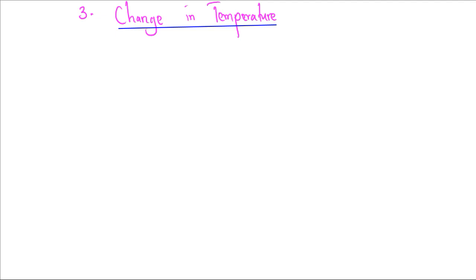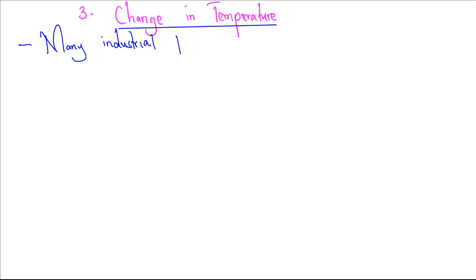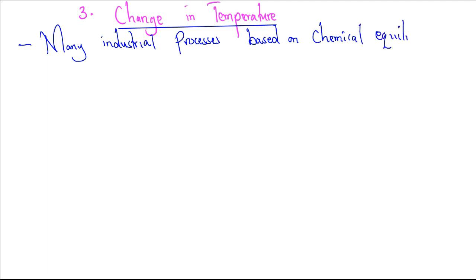Many industrial processes are based on chemical equilibrium. The ability to change the position of equilibrium in a chemical reaction by changing the conditions of the reaction is important in such processes. For example,